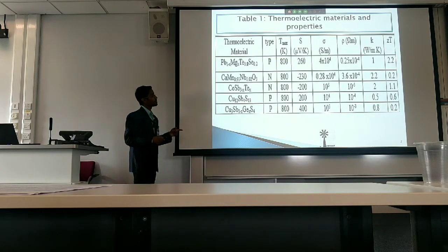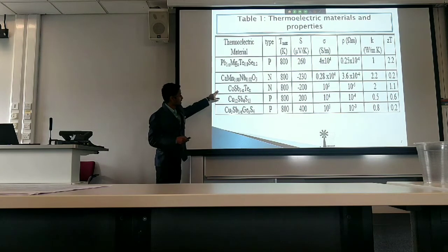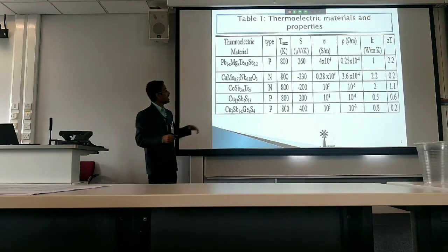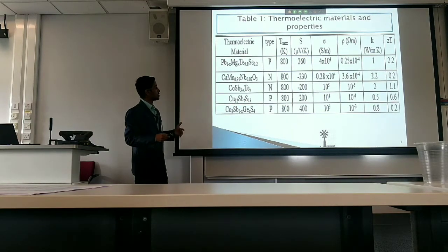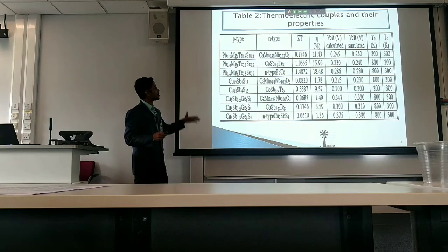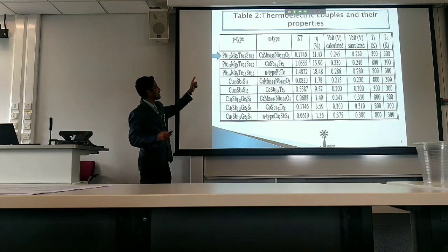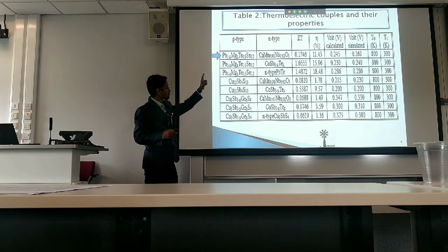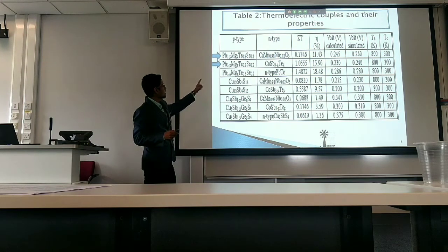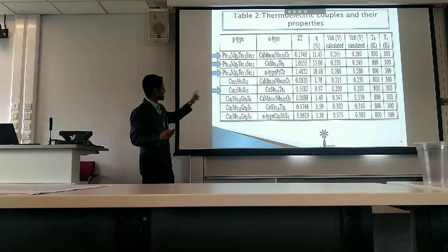These are the five thermoelectric materials studied: the first belongs to the lead telluride class, the second is a perovskite class material, the third is a skutterudite class material, and the last two are tetrahedrite class materials. These five thermoelectric materials were combined with each other to form eight thermoelectric couples whose properties can be seen in this table. Among the eight couples, four showed efficiency greater than 10 percent: lead telluride combined with perovskite, lead telluride combined with skutterudite, both p-type and n-type lead telluride, and the tetrahedrite class of materials.